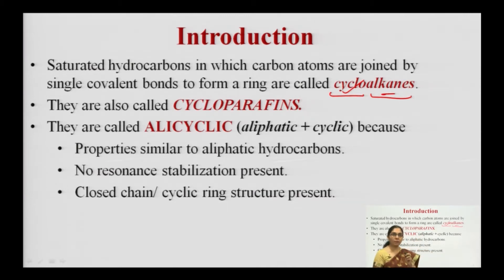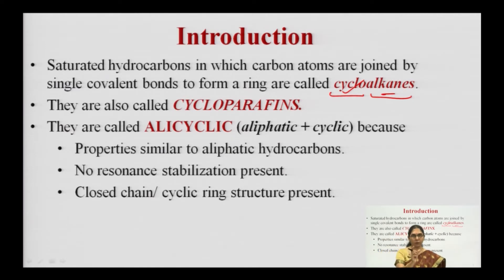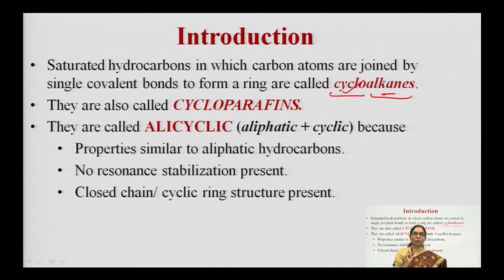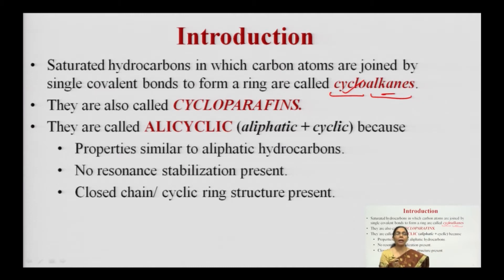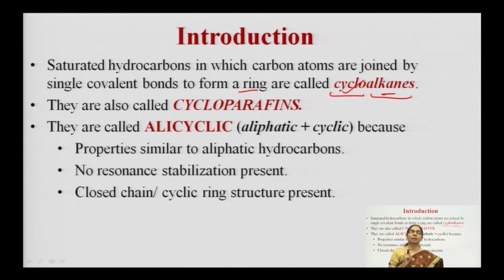For a better understanding: they are saturated hydrocarbons in which carbon atoms are joined by single covalent bonds. Until and unless all carbons are in a single bond framework, they are not saturated. Since all carbons have single bonds, they are saturated hydrocarbons, and importantly they form a ring. Alkanes having a saturated framework that form a ring are called cycloalkanes.